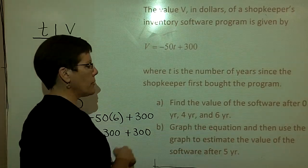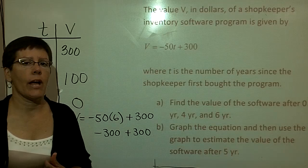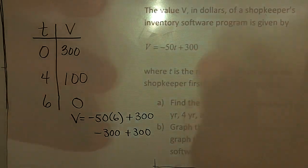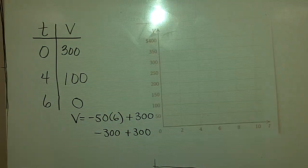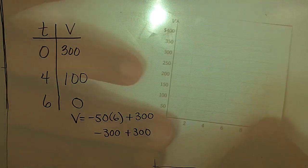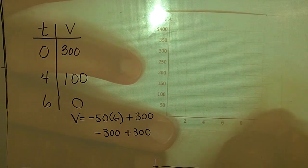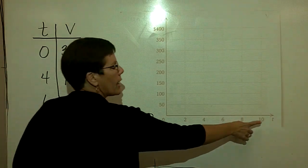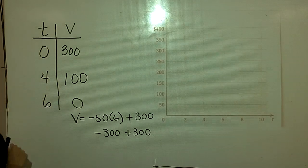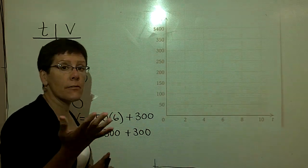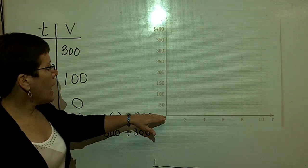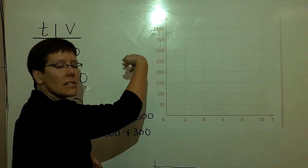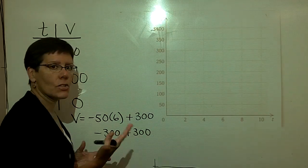What I need to do now in part B is to graph the equation and then use that graph to estimate the value of the software at a period of five years. So first, I'm going to remove the problem here and show some graph paper from behind. You'll notice that on the x-axis, I have T, which represents time, and on the y-axis, I have represented V, or the value of this software. And I've chosen to show increments from zero to $400 because I knew the software cost 300 originally, and sometimes I like to go a little bit beyond that, so I have some room here.